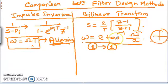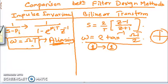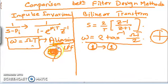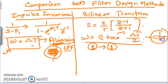In the bilinear transformation, aliasing is not present due to the unique relationship between analog and digital omega. In the impulse invariance method, aliasing is present and only the primary strip provides unique values, so this method is suitable only for low-pass filter design. For higher frequencies, the mapping fails, so band-pass and high-pass filters cannot be designed using the impulse invariance method.